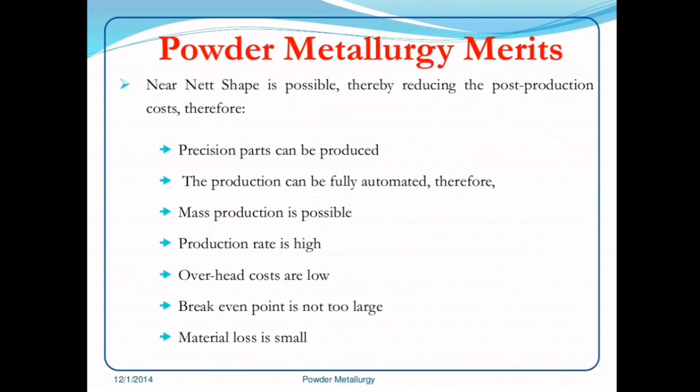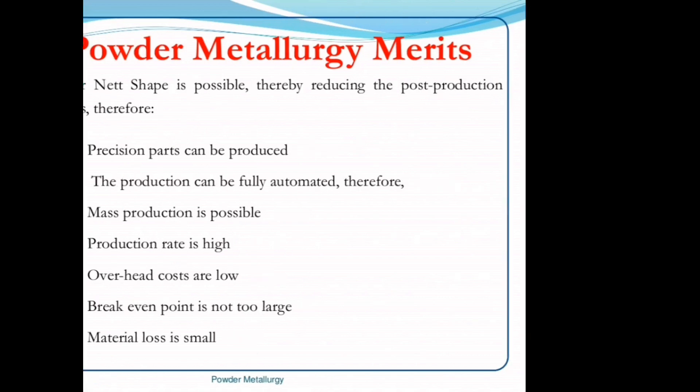Powder metallurgy merits: near-net shape is possible, therefore reducing post-production cost; precision parts can be produced; the production can be fully automated; mass production is possible; production rate is high; overhead costs are low; break-even point is not too large; and material loss is small.